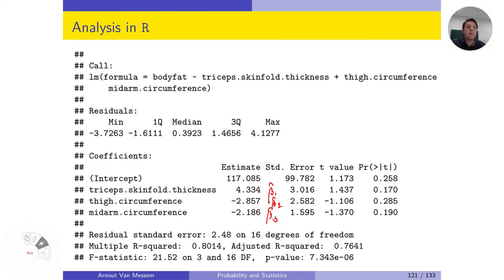This already gives us a first indication that there might be a problem. Because we said the circumference of thigh and mid-arm, we expect it to be larger with larger percentages of body fat, so we expected a positive influence and not a negative. So here we already have an indication that there might be something wrong.